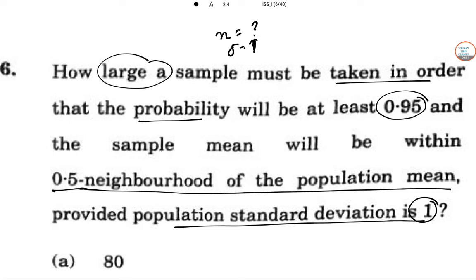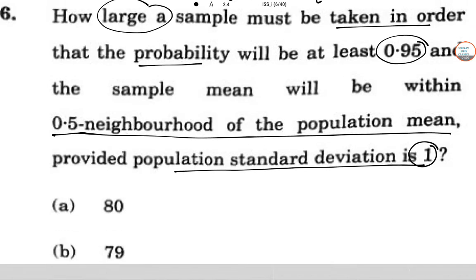So how large the sample? Using Chebyshev's inequality, we can proceed: P of |x̄n - μ| < ε is greater than or equal to 1 minus σ² divided by n ε². Okay.